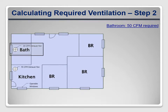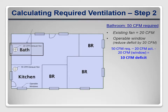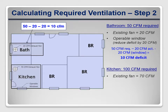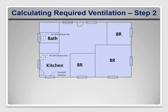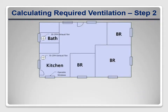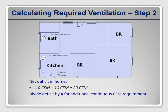Each full bath requires 50 CFM but gets credit for existing fans and operable windows. The existing bath fan provides only 20 CFM, and since there's an operable window, we add a 20 CFM credit — resulting in a net deficit of 10 CFM. The kitchen requires 100 CFM but the existing fan provides only 70. Again, we get a 20 CFM credit for an operable window — note that there are two windows in the kitchen, but you only get one window credit per room. So the net deficit is also 10 CFM for the kitchen. Adding the two deficits: 10 + 10 = 20 total CFM. Since the fans are intermittent, we divide by four: 20 ÷ 4 = 5 CFM exhaust deficit.